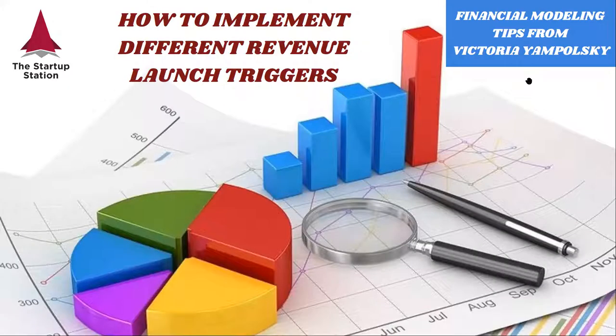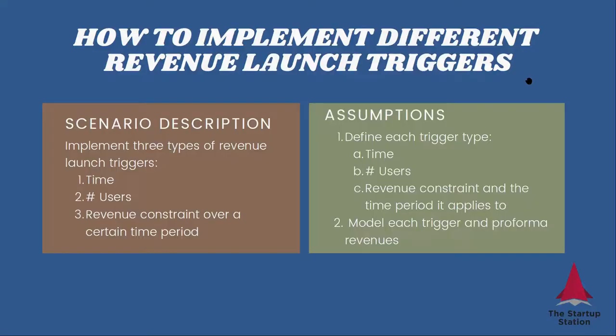Hello and welcome to the weekly financial modeling tips by the Startup Station. We're going to learn today how to implement different revenue launch triggers. There are three types: based on time, based on the number of users, or based on a financial constraint — most often a revenue constraint over a certain time period.